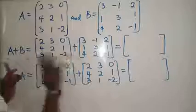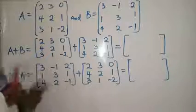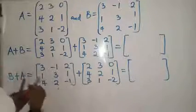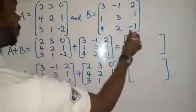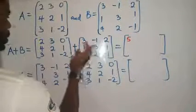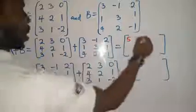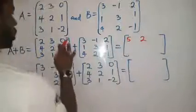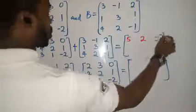So you just add this like you add your numbers, normal way of adding numbers. So 2 plus 3 is 5, 3 plus minus 1, that simply means 3 minus 1, that's 2. 0 plus 2, 2.